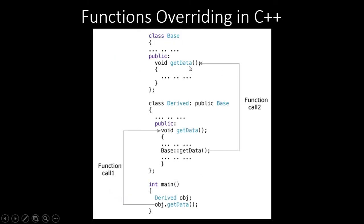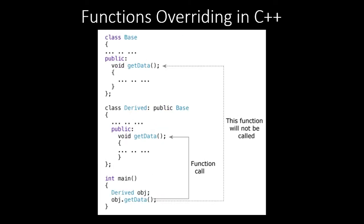To call the base class function explicitly, inside the derived class's 'getData' you write 'Base::getData'. This double colon is called the scope resolution operator. So when you call 'obj.getData', the derived class function runs, but inside it calls the base class 'getData' — a two-step process. This is why it is called overriding: the derived class 'getData' overrides the base class 'getData'.